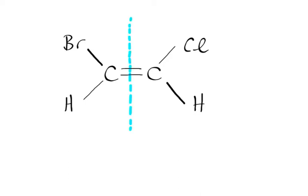So the rule is that we choose the atom with the greater atomic number. So on the left-hand side, it's hydrogen versus bromine. Bromine with a much greater atomic number. And on the right-hand side, chlorine has a much greater atomic number than hydrogen. So this is the Z isomer.